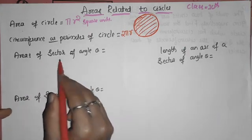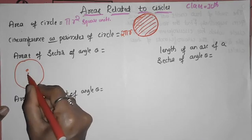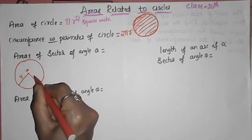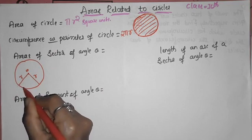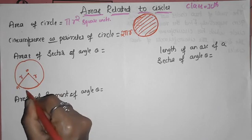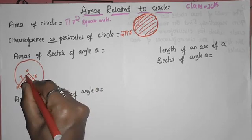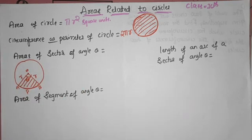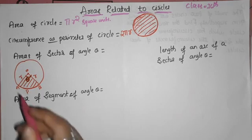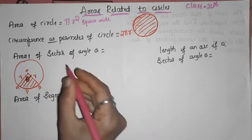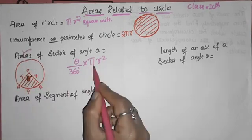We will learn area of sector of circle. So when we have a circle, this is a center, we have 2 radii. We have already learned sector in last section. The sector is nothing but which is bounded by 2 radii and part of circle. This region is called sector. Here I have angle theta. The total center angle is 360 degrees. The area of sector — the formula given for this is theta by 360 into pi r square.